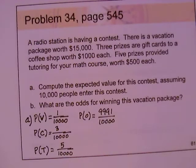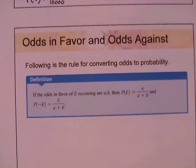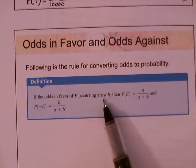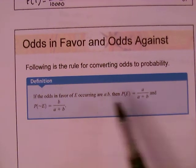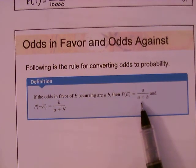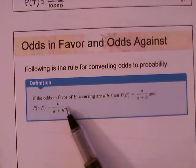Here is the rule for converting odds to probability. If the odds in favor of E are A to B, then P(E) equals A divided by A plus B, and P(not E) equals B divided by A plus B. The first number before the colon becomes your numerator, and the sum of both numbers is your denominator.